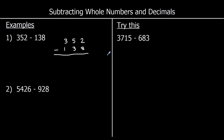Now we're ready to take away. We start with the smallest column, which is the ones, and I've got 2 take away 8. Now 2 take away 8 will give me a negative answer, so I don't want to do that. What I'm going to do instead is steal one of the tens. So I've got 5 tens at the moment; if I take one off, that becomes 4. And I'm going to add that 10 to my ones column, which gives me 12. So 12 take away 8 is 4.